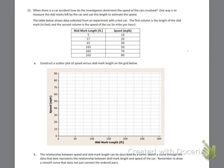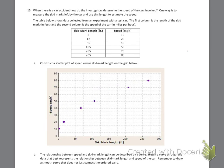Let's look at a scatterplot of the skid mark data to see if it's linear. Here are the six data points plotted. Part B says the relationship between speed and skid mark length can be described by a curve — this is a nonlinear situation. You can see a curve coming through the data, then leveling off a little bit — like a hill that starts out steep and then flattens out.